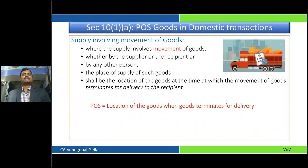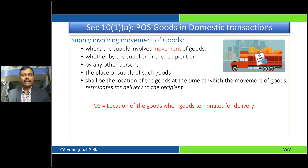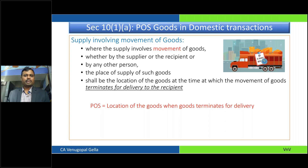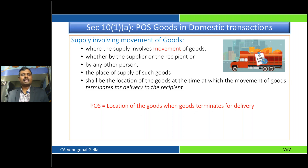Section 10 deals with place of supply for goods in the case of domestic transactions. The first rule, Section 10(1)(a): whenever the supply involves movement of goods — whether caused by the supplier, recipient, or any other person — the place of supply shall be the location of the goods at the time at which the movement of goods terminates for delivery to the recipient. Wherever it is terminating for delivery to the recipient, that would be the place of supply. Questions can be put in the chat and we will take them up after the session.